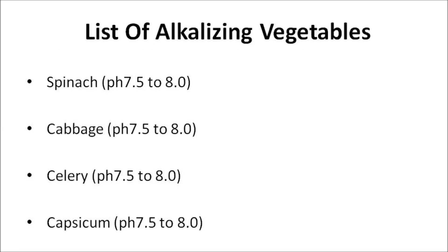Here is a list of some alkalizing vegetables. Spinach is very low alkaline-forming, with a moderate alkaline pH of 7.5 to 8.0, and its content raises alkalinity. Cabbage is a low alkaline-forming food with a moderate alkaline level of 0.75 to 0.80, and it's mineral-rich. Celery is a very low alkaline-forming food with a moderate alkaline pH of 7.5 to 8.0, and it elevates acid food toward the alkaline direction. Bell peppers (capsicum) are a low alkaline-forming food with a moderate alkaline pH of 7.5 to 8.0, and they are mineral-rich.